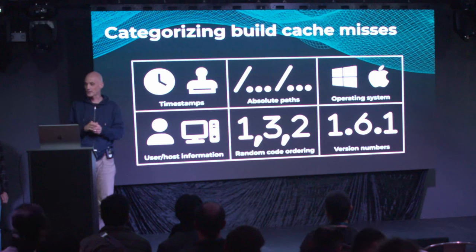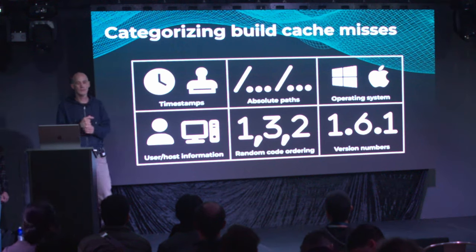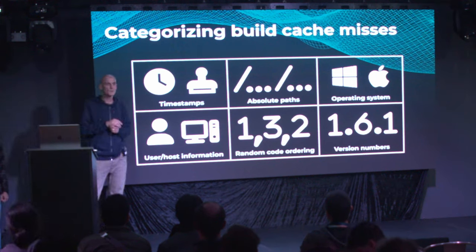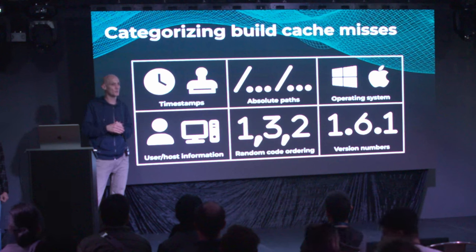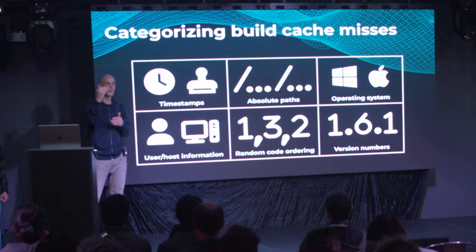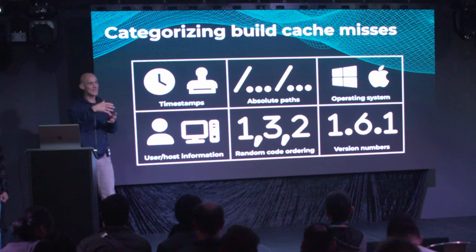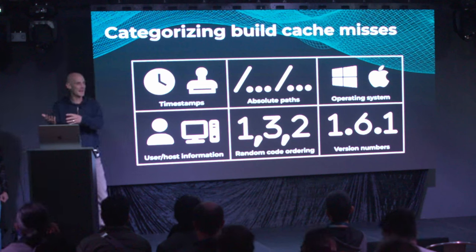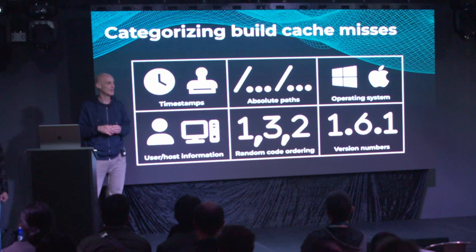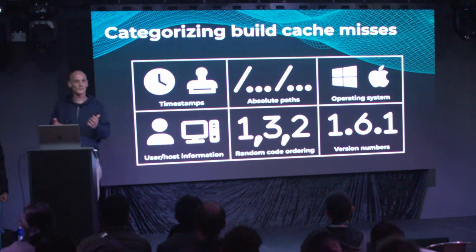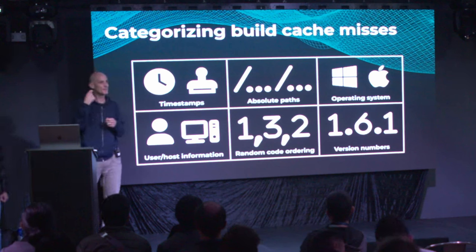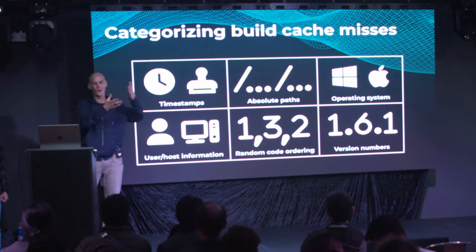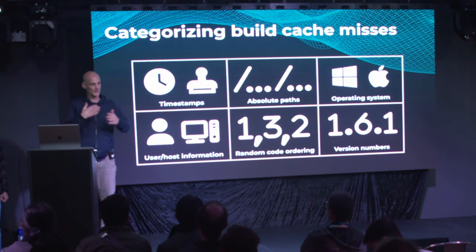The build might add user and host information, which again creates volatile inputs. And very interestingly — happening quite a lot — is when you use code generators, quite a few of them don't generate deterministic output. Some create random method names; others create random ordering of methods. So whoever consumes that source code — the next task — will deal with volatile inputs. Similarly, version numbers bumped on CI using the pipeline or job ID will create volatile inputs.